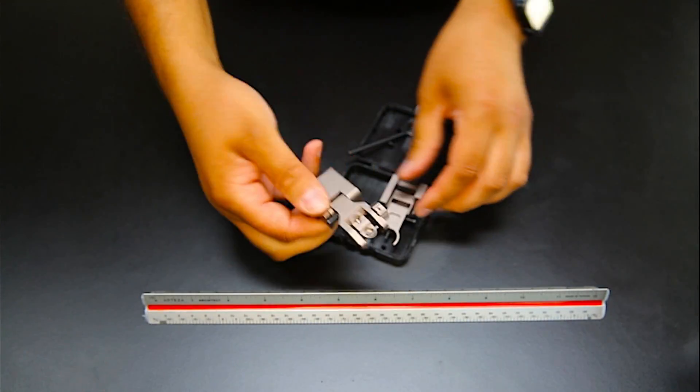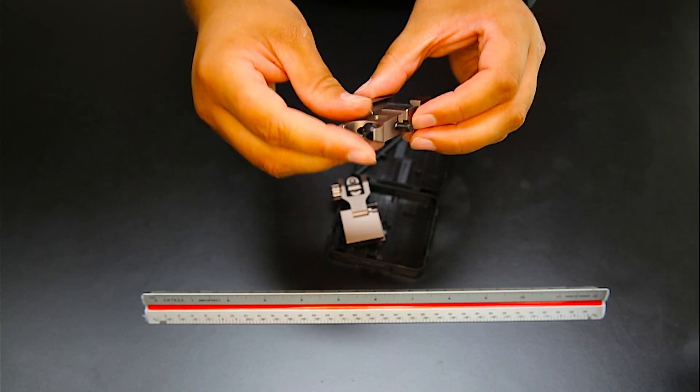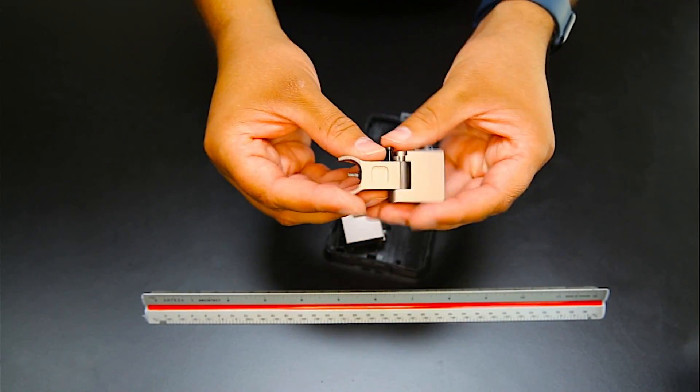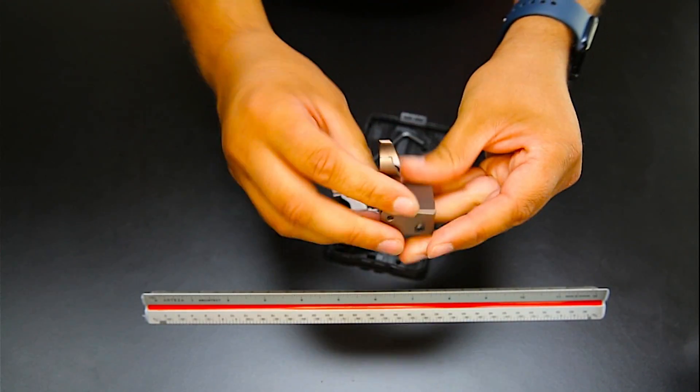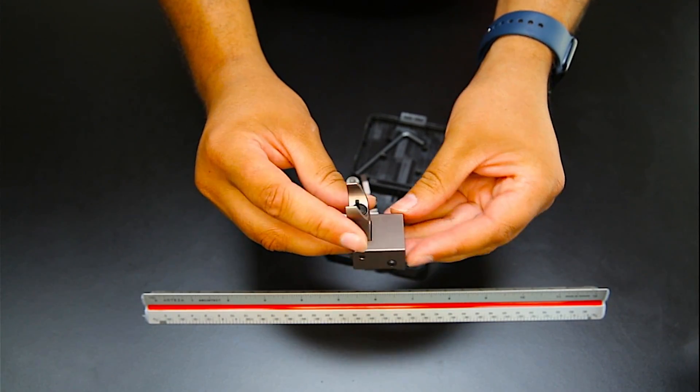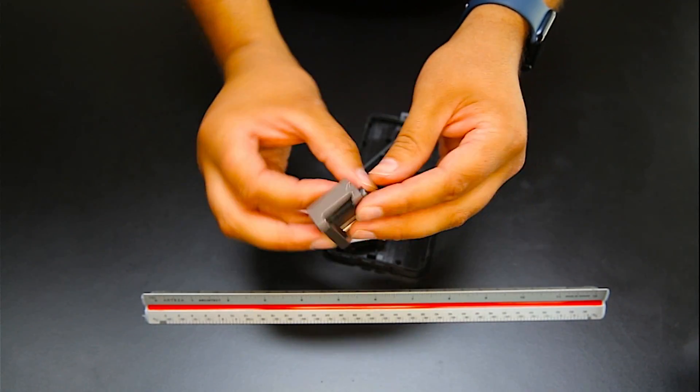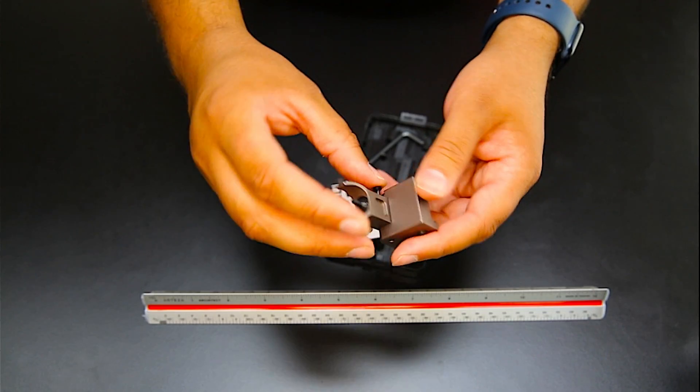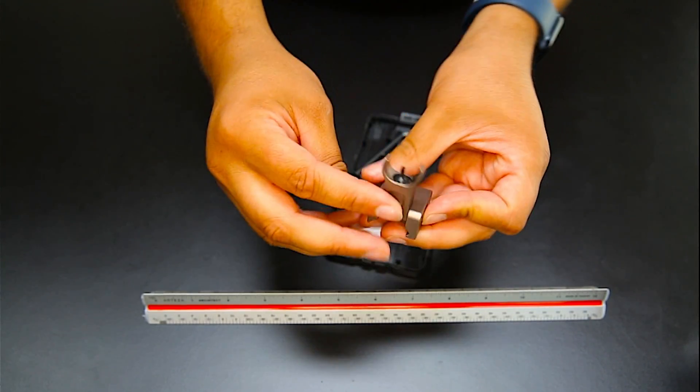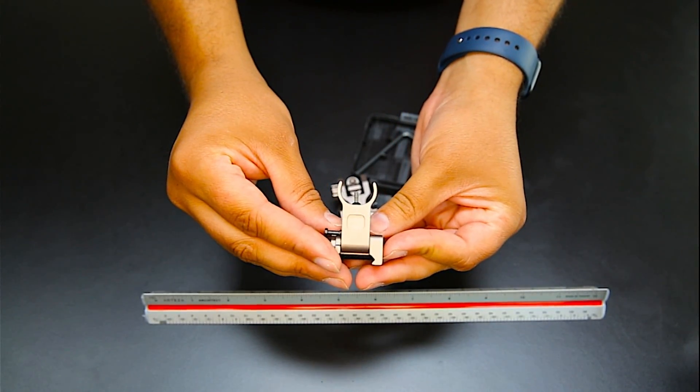This is the front one. Again it has the quick up and down of the sights, hooks on the same way onto your rail.